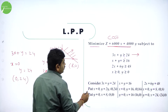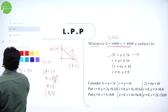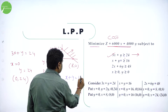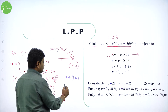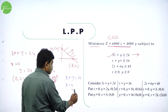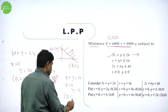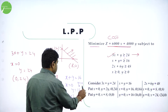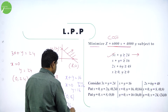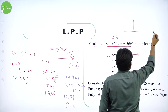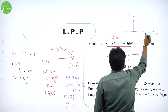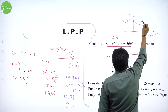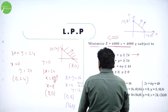Now Line 2: X + Y = 16. Put X = 0 to get Y = 16, giving point (0, 16). Put Y = 0 to get X = 16, giving point (16, 0). We draw a line segment between these two points. Since the constraint is greater than or equal to, we shade above this line as well.